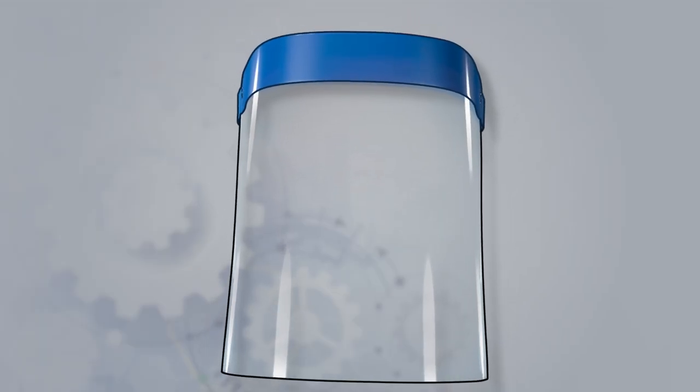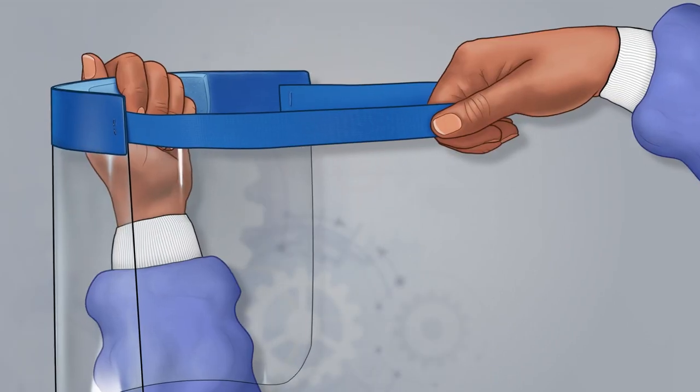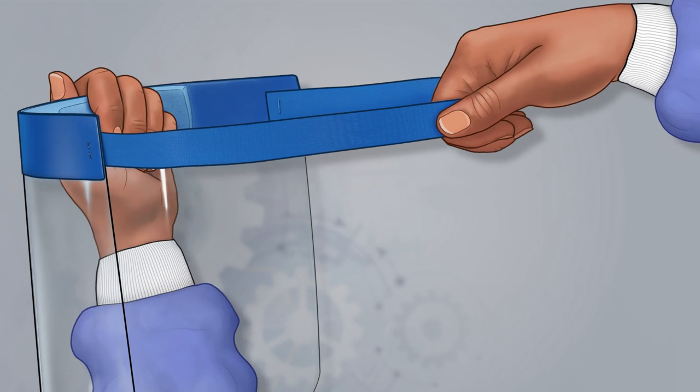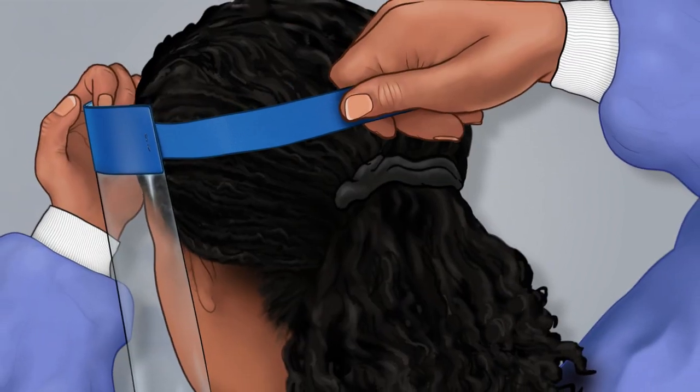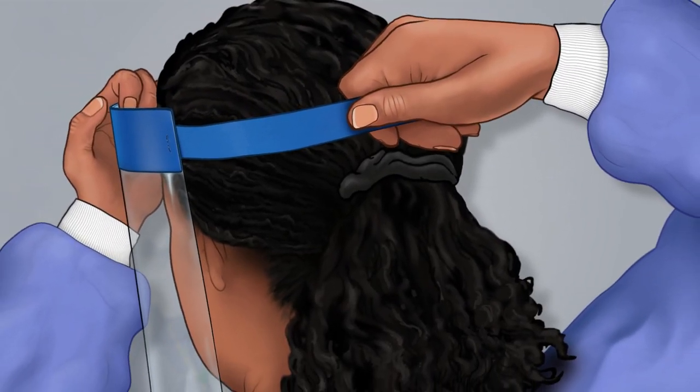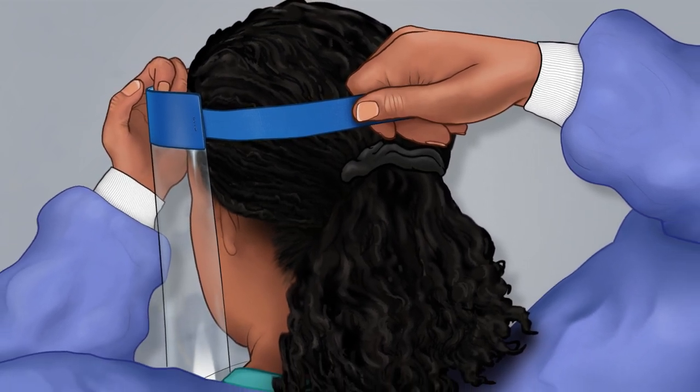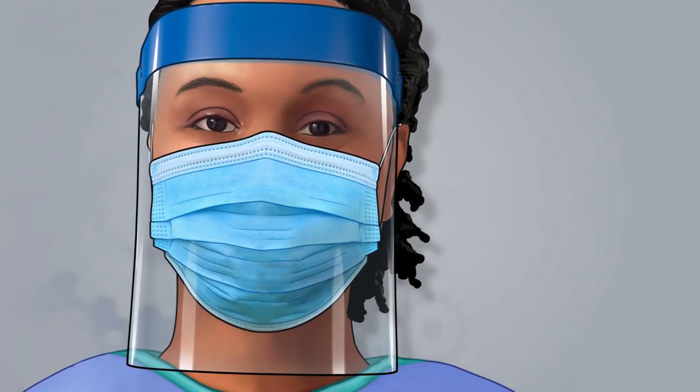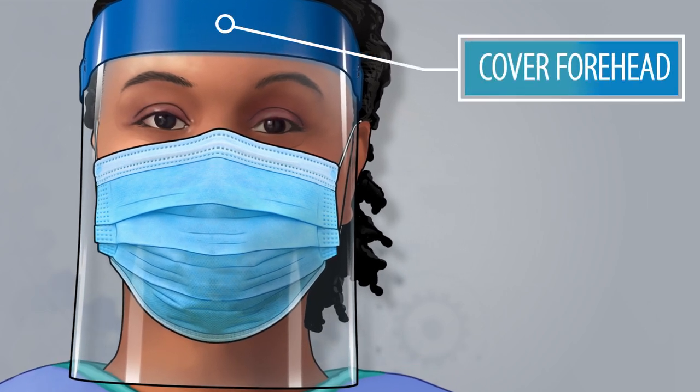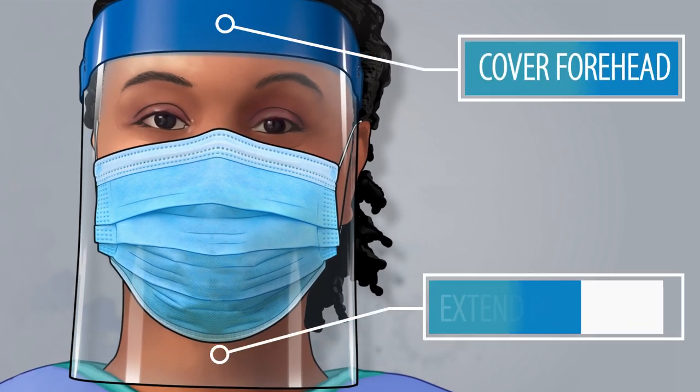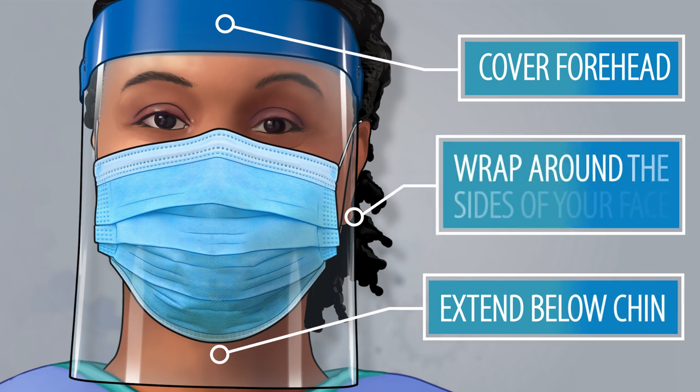Put on the disposable face shield and stretch to expand the elastic strap and place it behind your head with the foam resting just above your eyebrows. Use the strap so that it fits snugly against your face. Face shields must cover your forehead, extend below your chin, and wrap around the sides of your face.